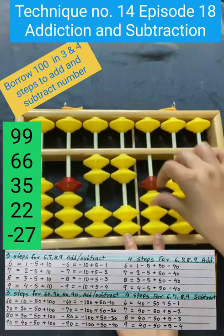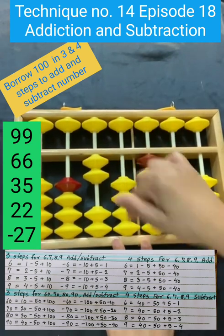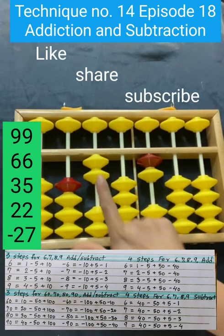Next is 22, this is 20, this is 2, and next is reduce 27. First to reduce 20, and for 7, you have to borrow this 100.